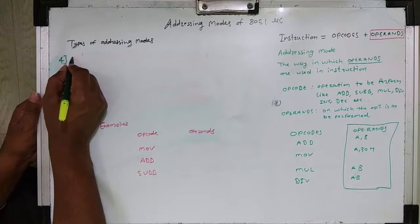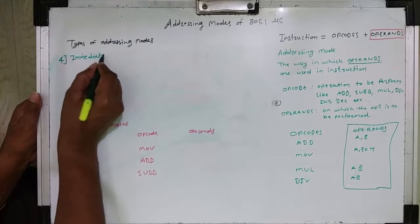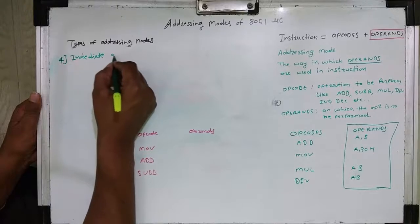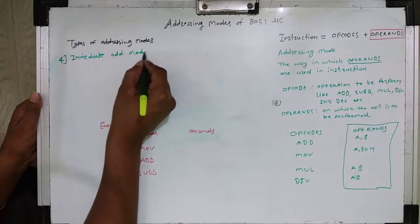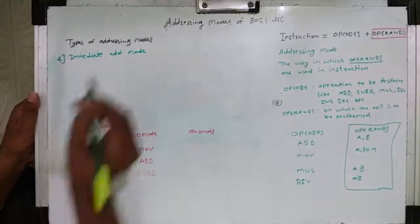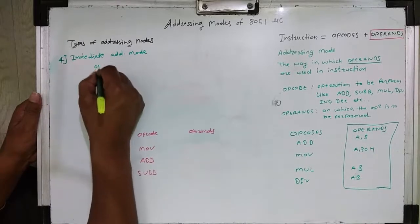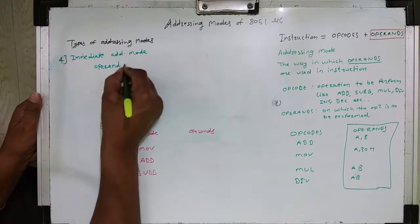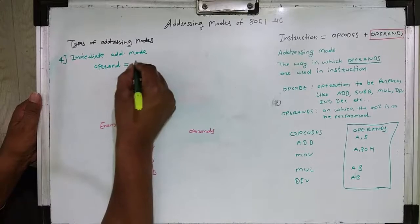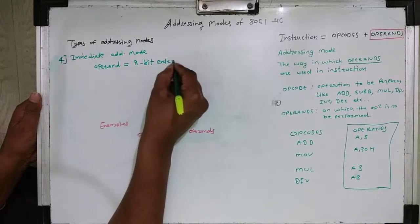The fourth addressing mode is immediate addressing mode. In immediate addressing mode, the user can use their own data as a part of the instruction. The operand consists of user data, external data, or immediate data, which is 8-bit data.